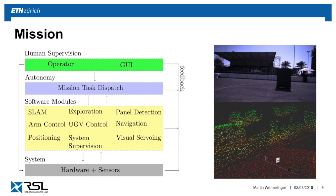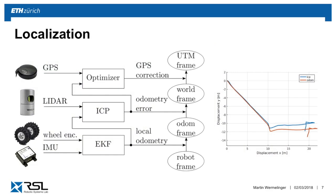For this, we used a state machine that started the different states: exploration of the field, navigation to the range panel, panel detection, manipulation, and so on. The user only received feedback such as the camera stream or the generated point cloud. The state machine took care of switching between the different states and also recovering them if something went wrong.